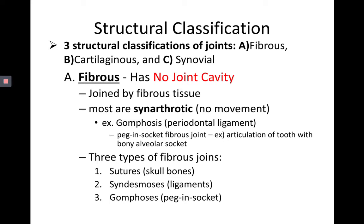Fibrous joints have no joint cavity. Their name tells you they're joined by fibrous tissue. Most fibrous joints are going to be functionally synarthrotic, meaning no movement. A good example of a synarthrotic fibrous joint is a gomphosis — that's your periodontal ligament, also known as a peg-and-socket fibrous joint. Essentially, it's your tooth sitting in its socket, the articulation of a tooth with its bony alveolar socket.